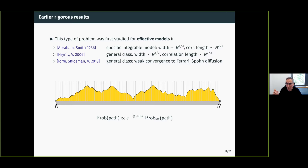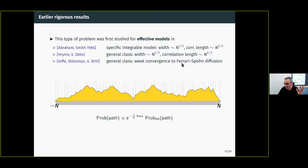The culmination of this line of research is a paper from six years ago with Dima and Senja, where for a general class of random walks we proved that under the natural rescaling — horizontally by N^(2/3) and vertically by N^(1/3) — and letting N go to infinity, the distribution of these interfaces in the effective model converges weakly to the distribution of trajectories of the Ferrari-Spohn diffusion, which I will introduce shortly.